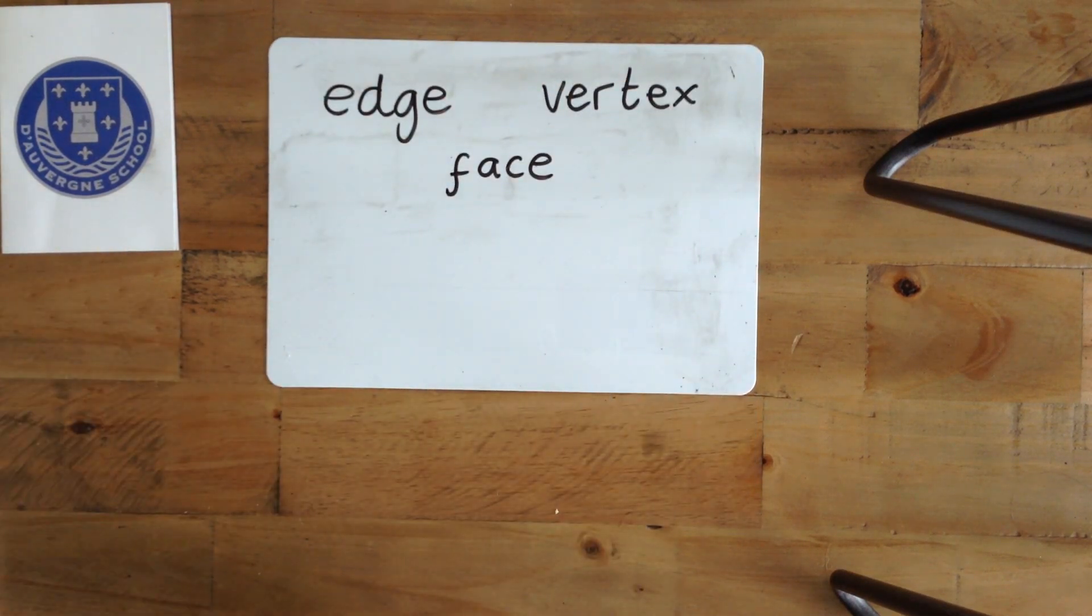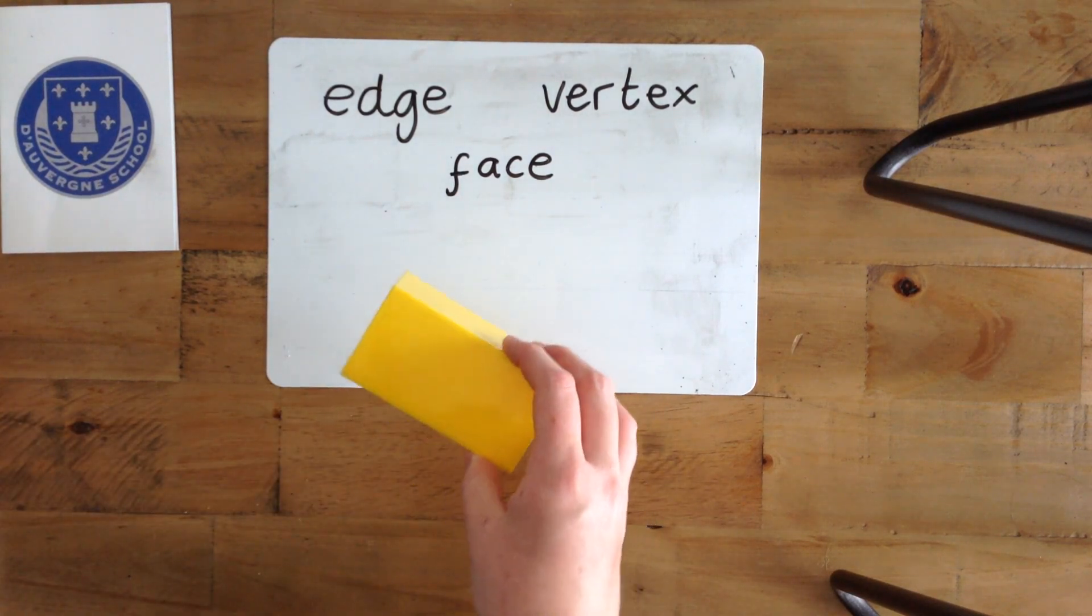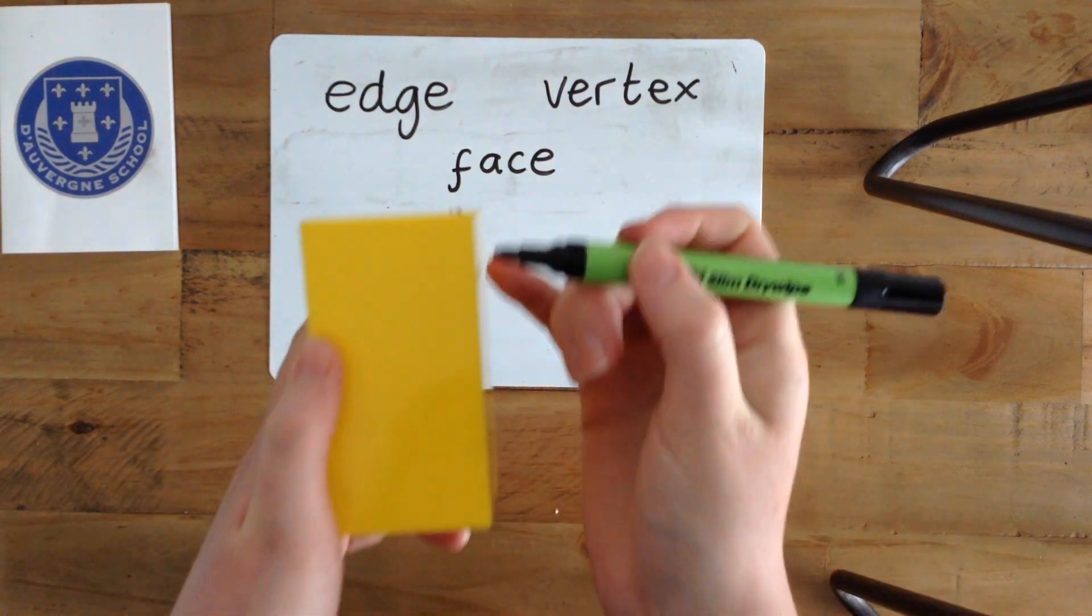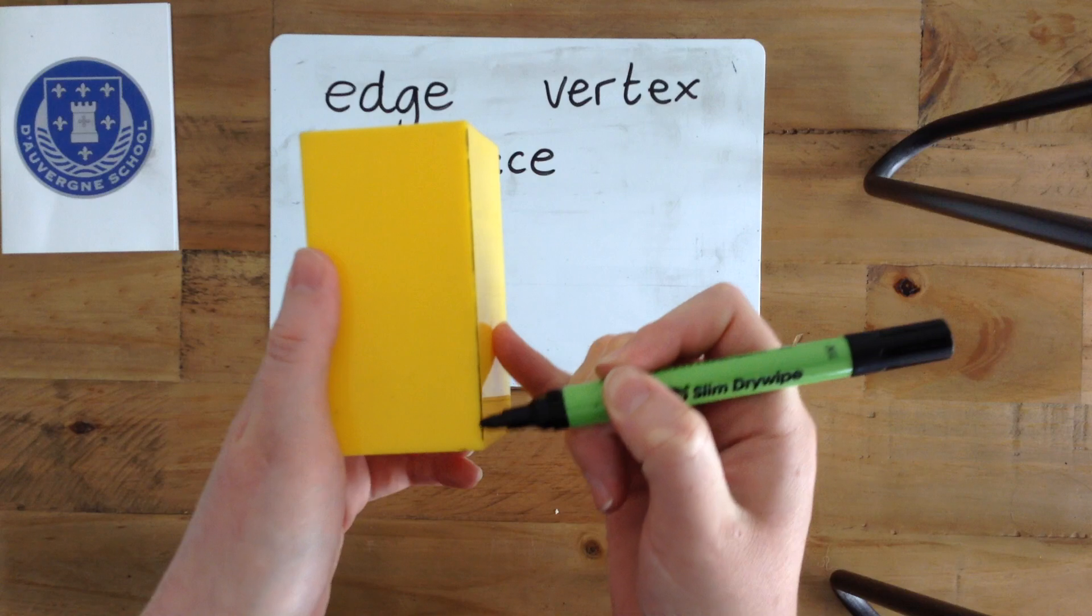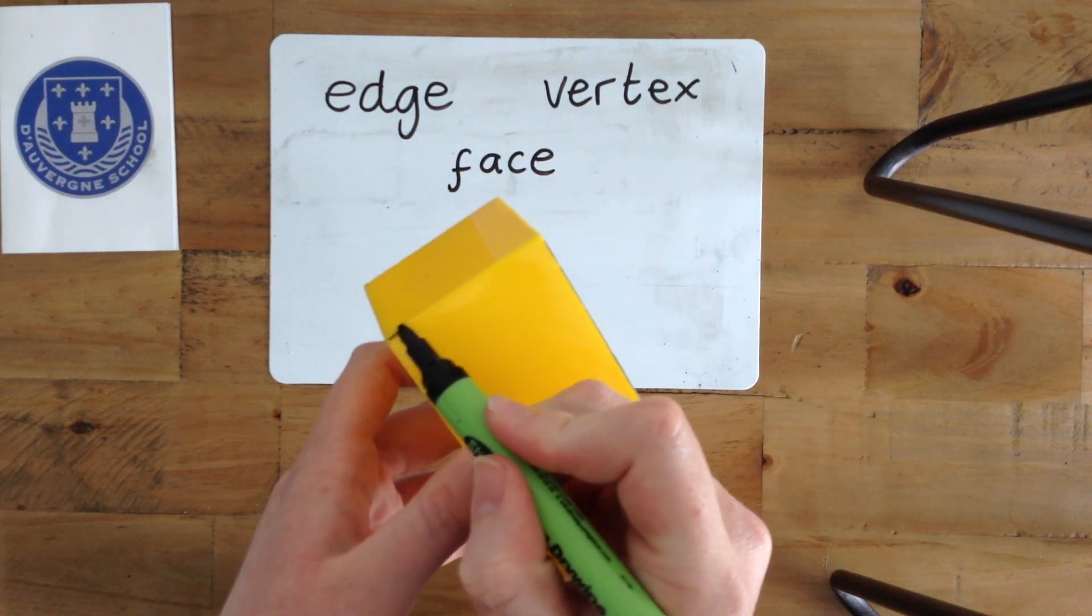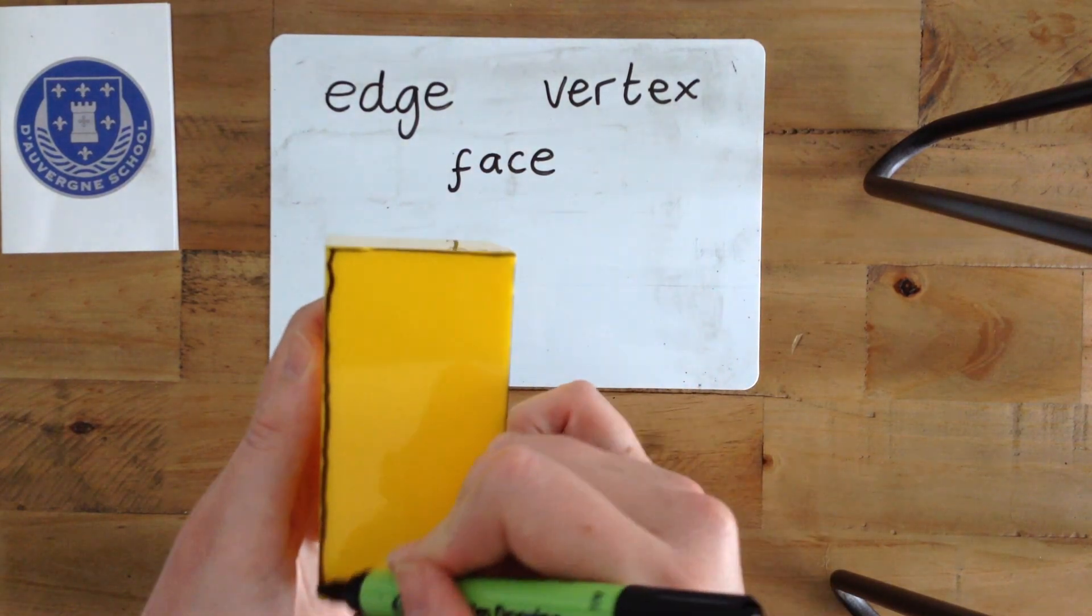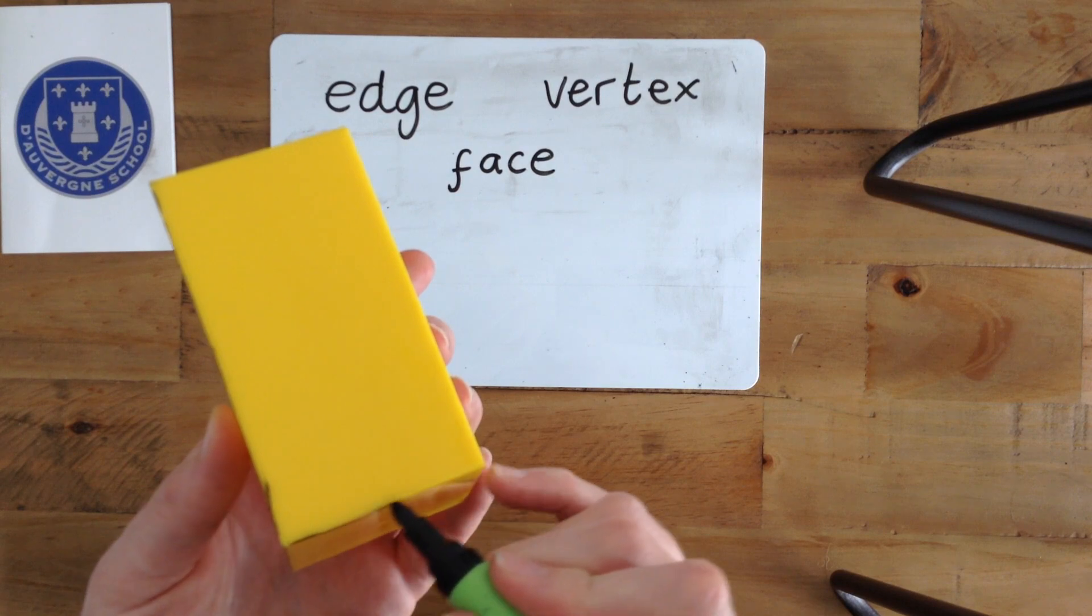I'm going to start off by looking at a cuboid. On a cuboid, I'm going to show you where the edges are. The edges are these down here. We've got all our edges—these are the straight lines all around the shape.